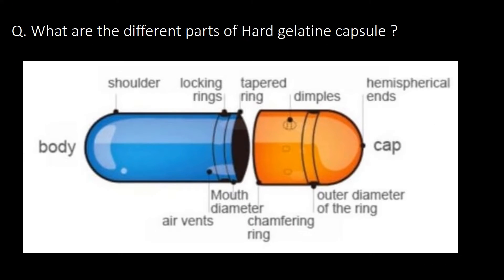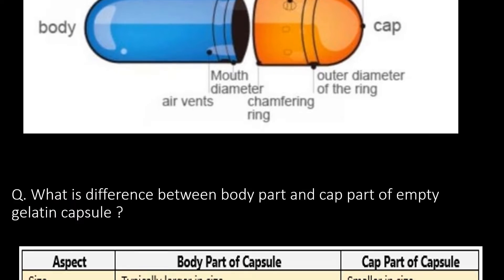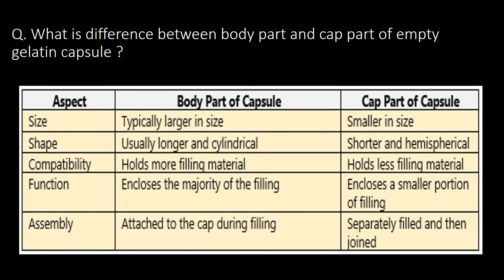What are the different parts of a hard gelatin capsule? A hard gelatin capsule can be majorly divided into two parts: body and cap. The body part contains the shoulder, locking ring, tapering ring, mouth diameter, and air vents, whereas the cap part contains the dimple, hemispherical ends, outer diameter of the ring, and tapering ring.